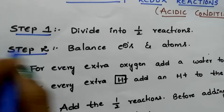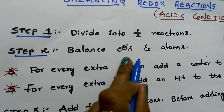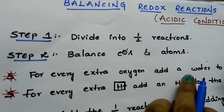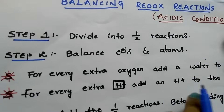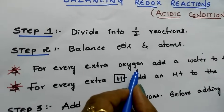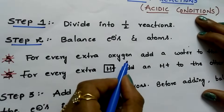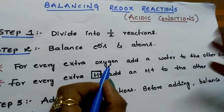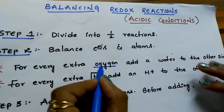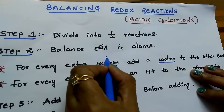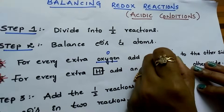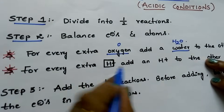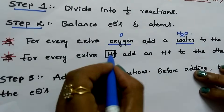Step number 2: Balance the electrons and number of atoms. You have to balance the atoms except hydrogen and oxygen. For balancing oxygen, it is very important in acidic media. For each oxygen, you have to add a water molecule to the opposite side — for one oxygen, you add one water molecule. For every extra hydrogen, you have to add H⁺ ions to the opposite side.